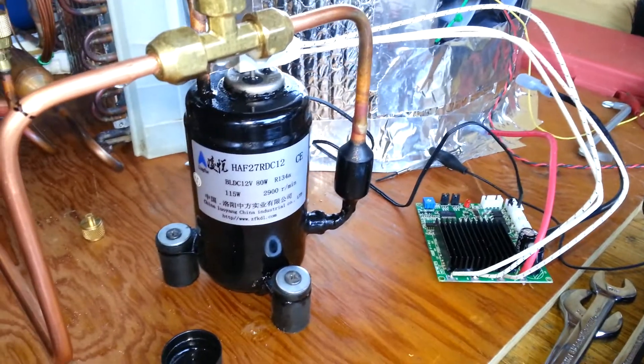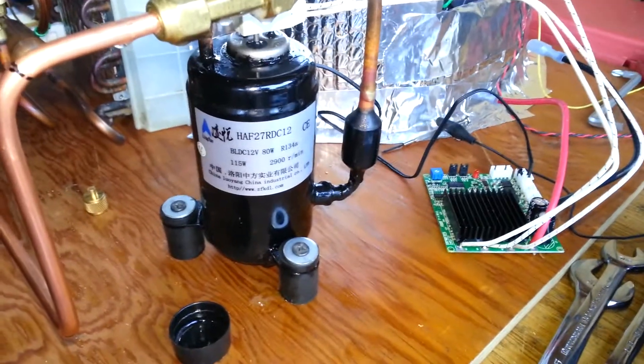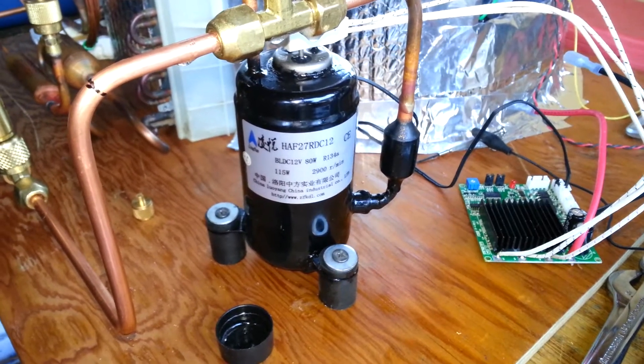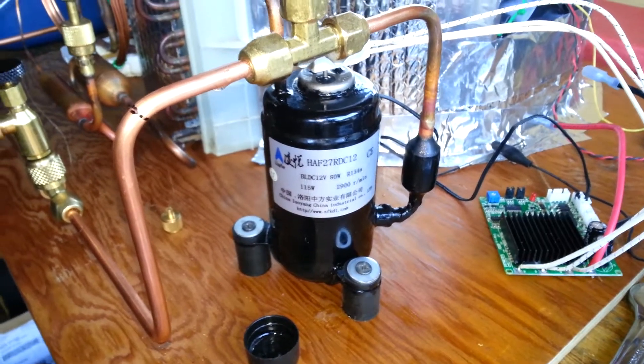Variable speed, 1,700 RPM to 2,900 RPM. I think it's around 2 or 2.4 cubic centimeters rotary compressor.